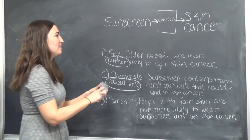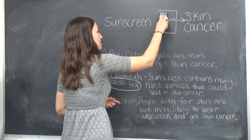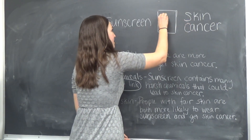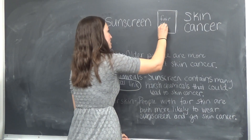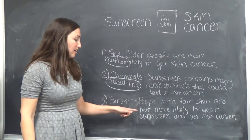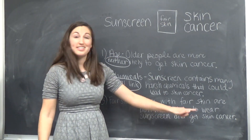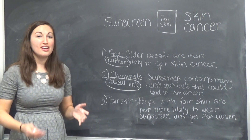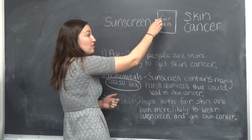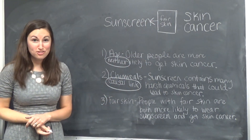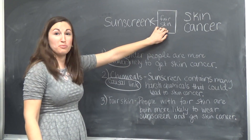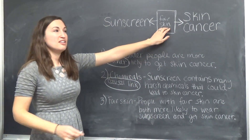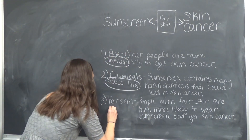Last one is fair skin. Fair skin is what I want to put in this box. It says that people with fair skin are both more likely to wear sunscreen and get skin cancer. So I have to decide where do the arrows go. Does wearing sunscreen make you have fair skin? No, it's the opposite — if you have fair skin, you're more likely to wear sunscreen. And if you have fair skin, you are at a higher risk of skin cancer. See how on this one the arrows point in opposite directions — this has to be the confounder.